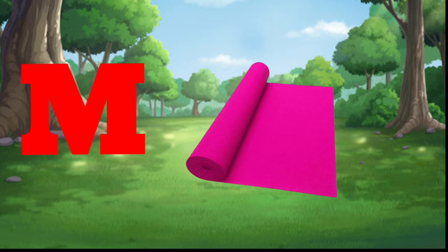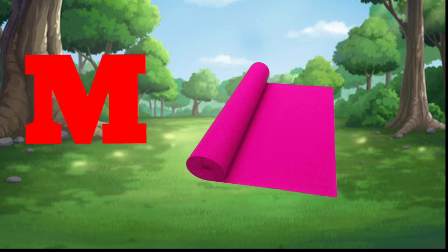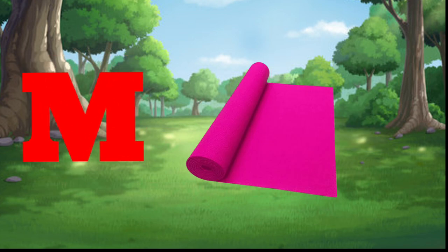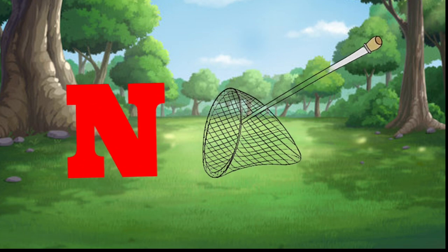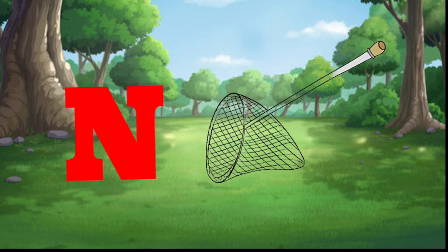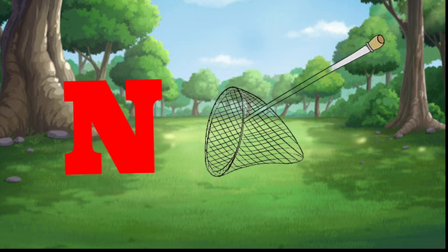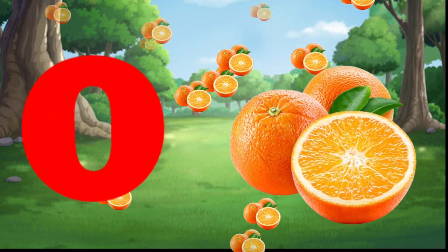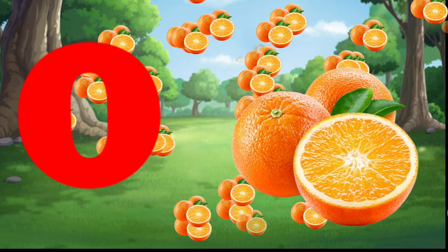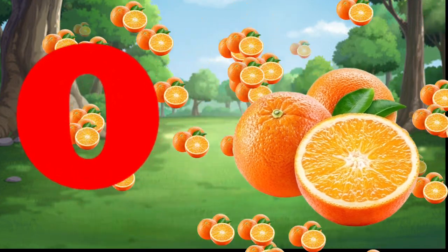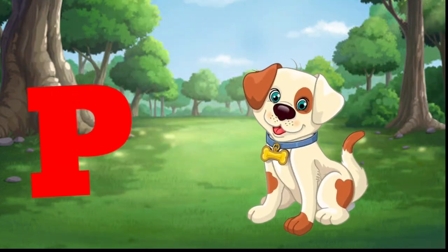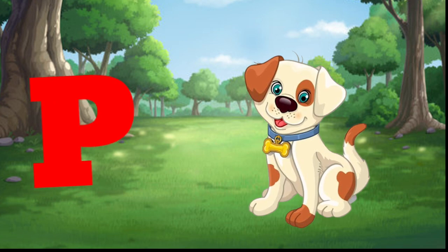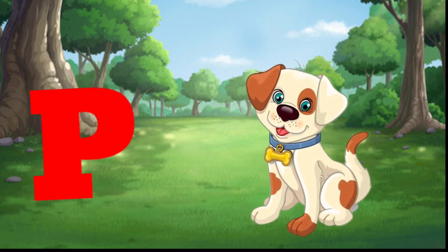M is for mat, m-m-mat. N is for net, n-n-net. O is for orange, o-o-orange. P is for pet, p-p-pet.